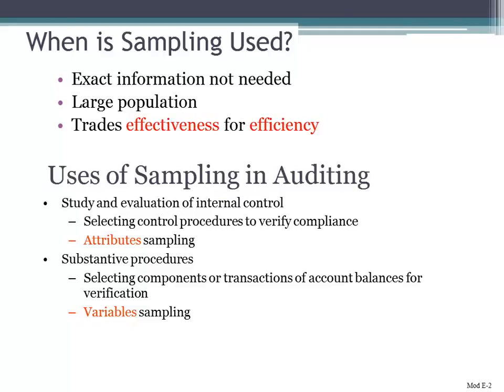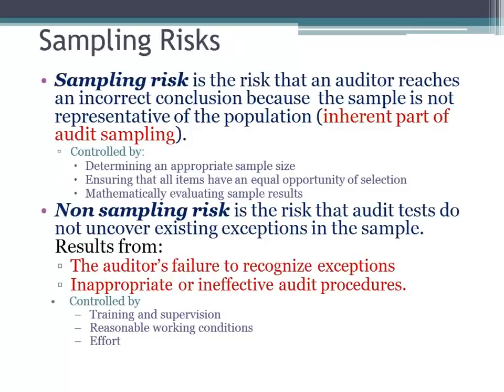We also have substantive procedures that we perform — those are procedures performed on account balances, not transactions, not controls, but on account balances. We're selecting components of those transactions or account balances for verification, and that's what we call variable sampling. The two chapters in your text cover a general overview of sampling and then attribute sampling, and I'm going to provide a discussion of variable sampling online. So let's just talk about sampling.